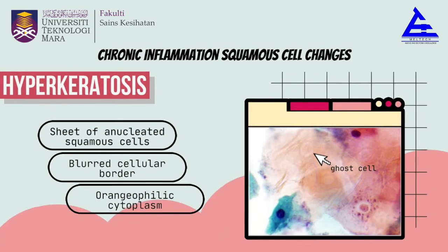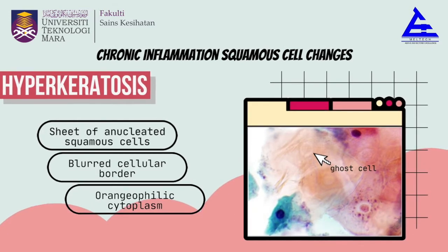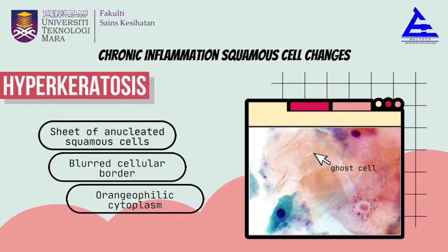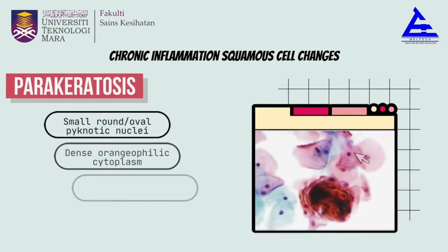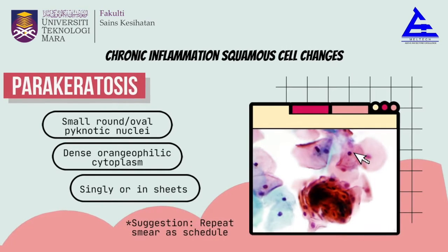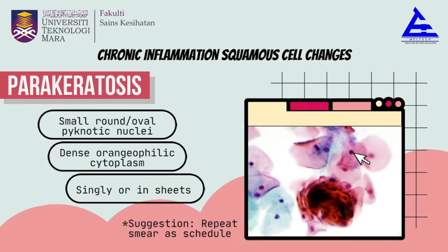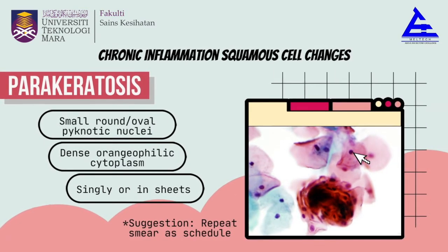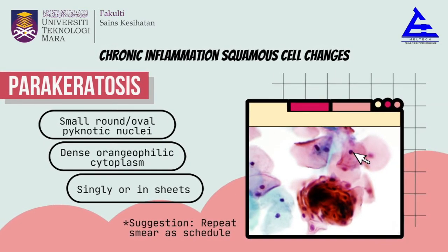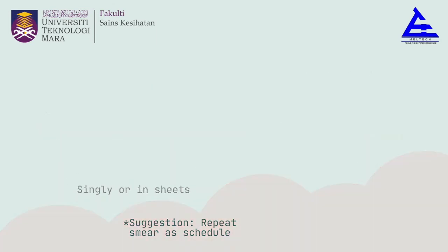For chronic inflammation squamous cell changes, hyperkeratosis shows characteristics of a sheet of enucleated squamous cells, rigid cellular border, and eosinophilic cytoplasm. Parakeratosis shows characteristics of small, round, or pyknotic nuclei, dense eosinophilic cytoplasm, and cells present singly or in sheets. The suggested management for this diagnosis is repeat smear as scheduled.